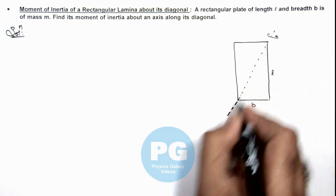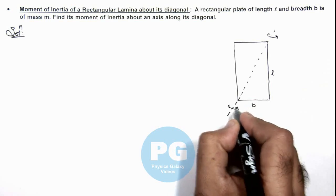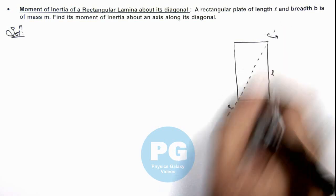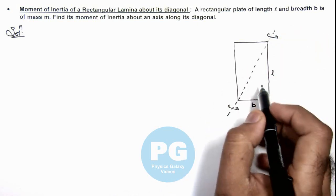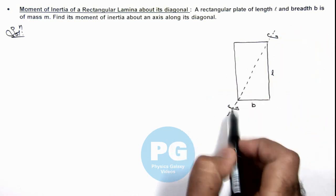If this rectangular lamina is rotated, we are required to find its moment of inertia. So this moment of inertia we can write as twice the moment of inertia of this plate.